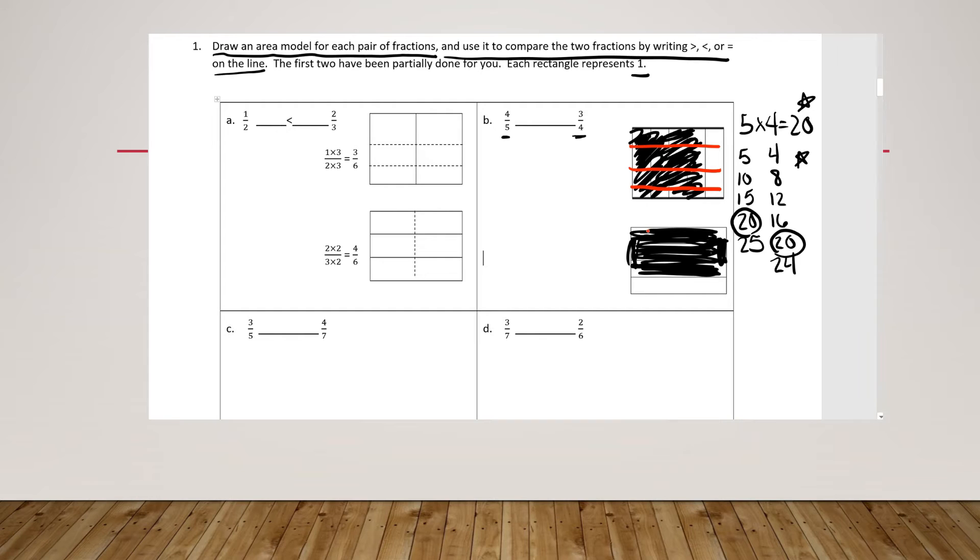And I can do the same on the bottom by changing this one into twentieths. I partition and count to create twenty equal sections in the bottom diagram as well.